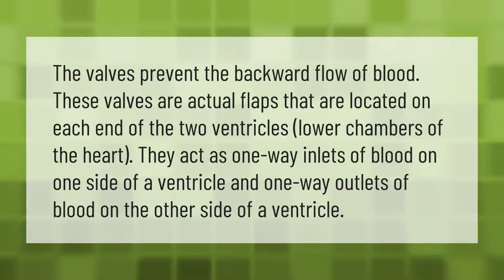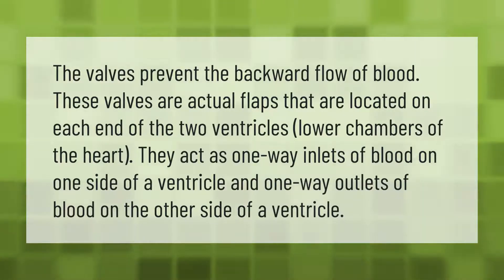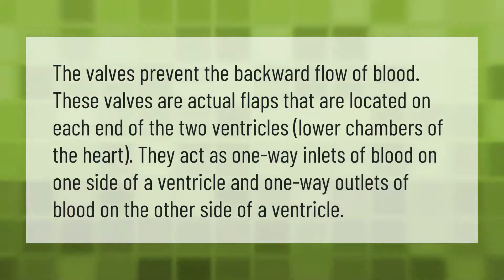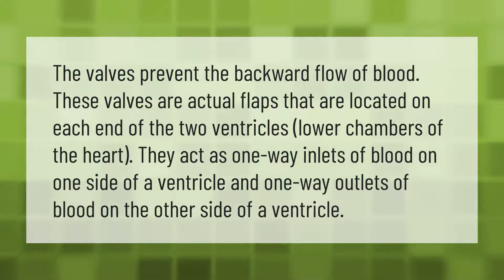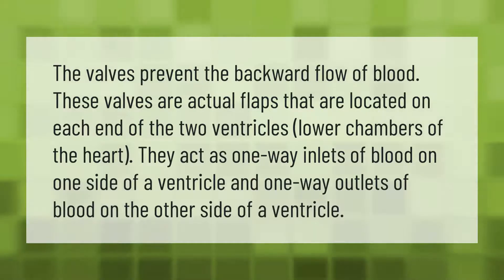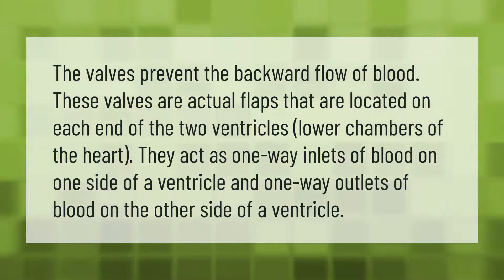The valves prevent the backward flow of blood. These valves are actual flaps that are located on each end of the two ventricles, the lower chambers of the heart. They act as one-way inlets of blood on one side of a ventricle and one-way outlets of blood on the other side of a ventricle.